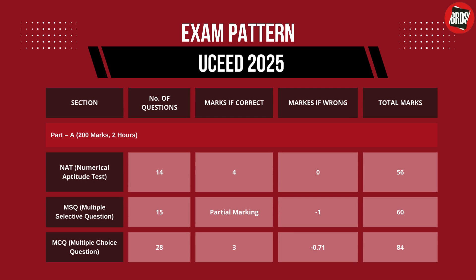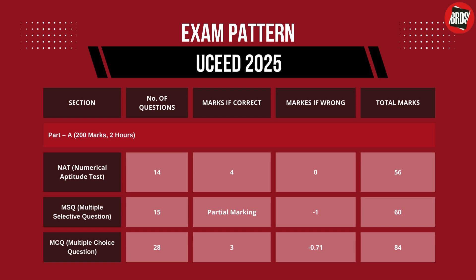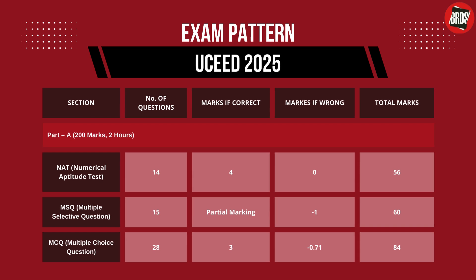MSQ — Multiple Select Question — will have 15 questions. Each MSQ has one or more correct answers out of 4 options given. 4 marks for every correct answer, but only if all correct answers are entered; 1 mark will be deducted for any incorrect answer. MCQ — Multiple Choice Question — this section will have 28 questions. Each MCQ has 4 choices out of which only 1 is the correct answer: 3 marks each for a correct answer and 0.71 marks will be deducted for an incorrect answer.